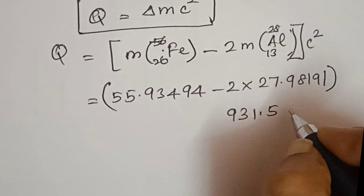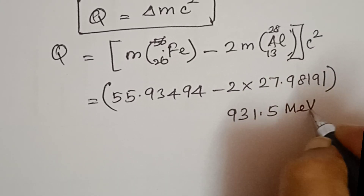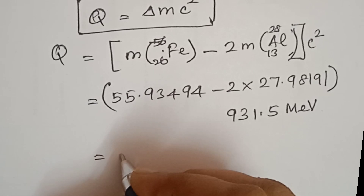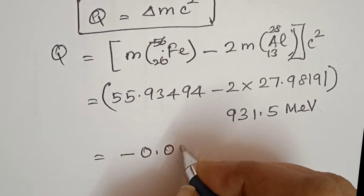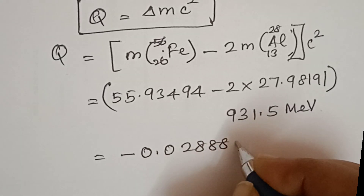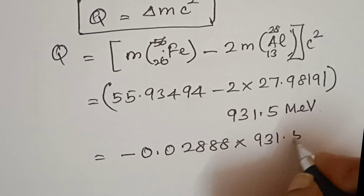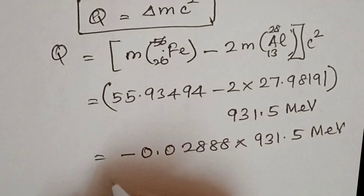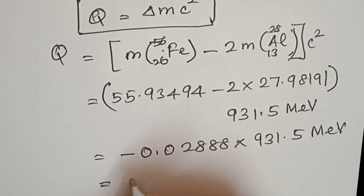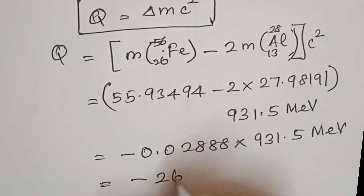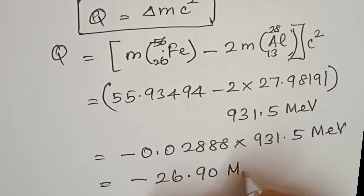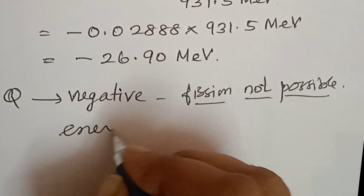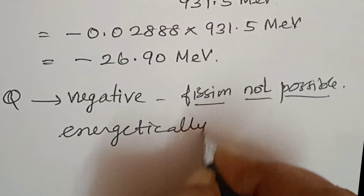Here, 931.5 MeV is the energy equivalent of 1 atomic mass unit, used to convert the mass defect into the Q-value in MeV.